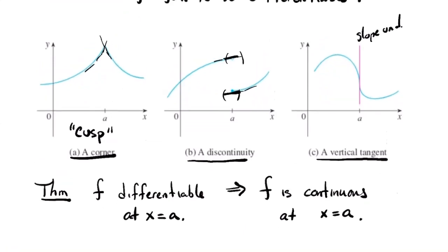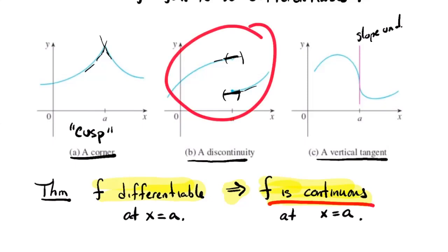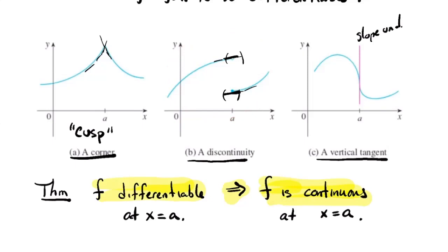If you're differentiable at some point, you have to be continuous — it's an important theorem. Any function that has a derivative at a point necessarily is continuous at that point; the limit has to exist and equal the function value. I'm not giving a proof here, but intuitively: if you have a rip in the graph, an asymptote, or something like that, then you can't have a tangent line.